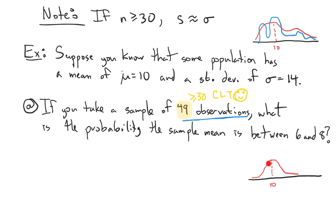The sampling distribution is going to look normal and have a smaller standard deviation than the original distribution. Remember, your points here are averages or means of 49 observations. Heuristically, large values are going to get canceled out by small values in the mean. So the observations in your sampling distribution — these means — are going to be closer together and less spread than in the original distribution.